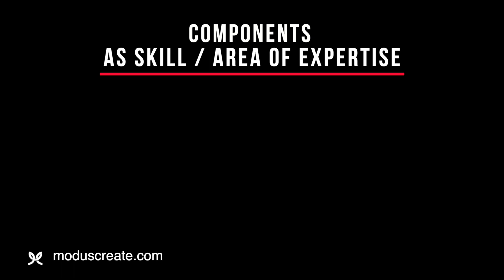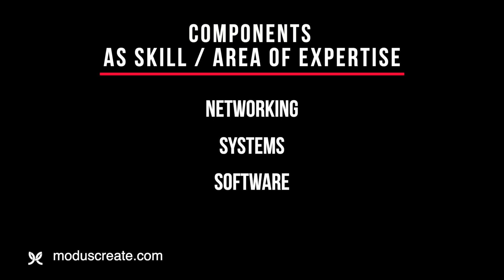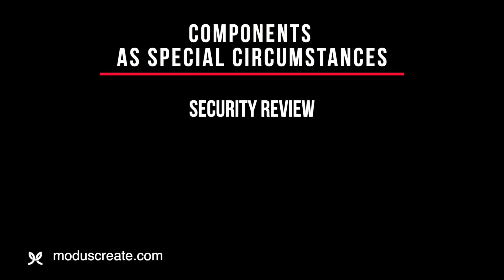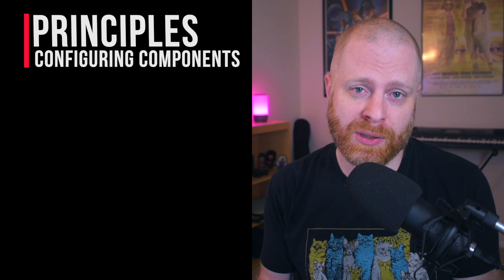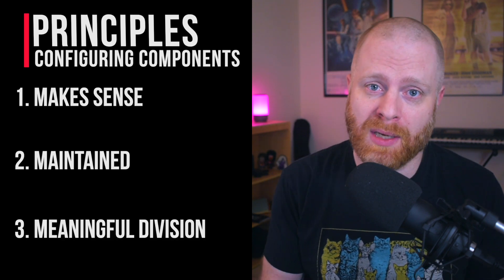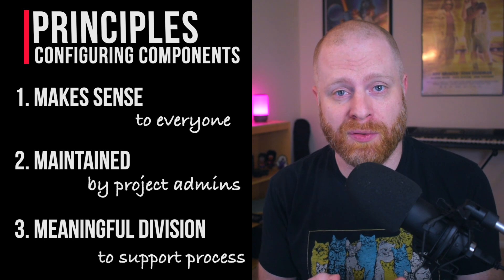Another scenario would be to designate different technical specialties on your team, like networking, systems, software, and hardware. You can also use components to tag or separate special circumstances and issues that you either want to change the process around or create reporting around — things like security review, tech debt, or personal information. There are obviously going to be a lot more examples, but what's important are the principles: that they make sense, that they're maintained, and that they create meaningful division.